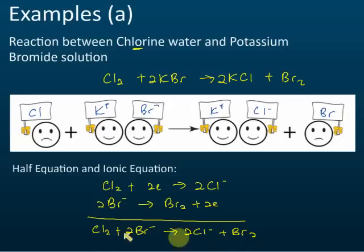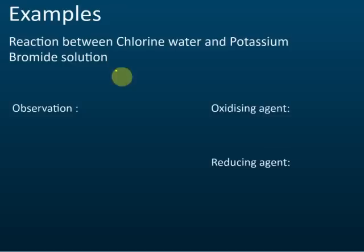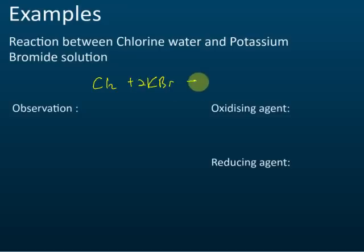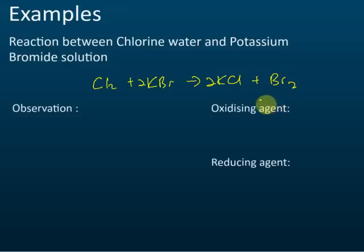Let's copy the equations here again. This is chlorine reacting with potassium bromide to produce potassium chloride plus bromine.